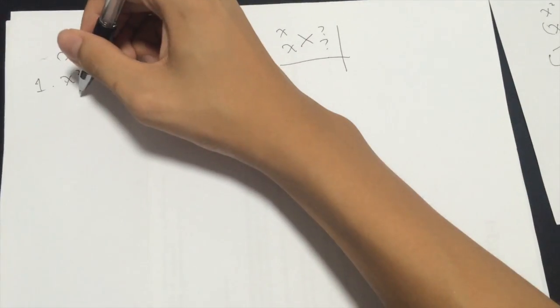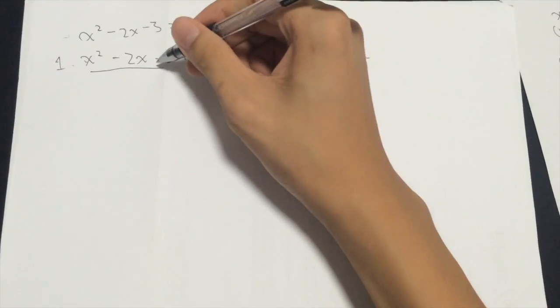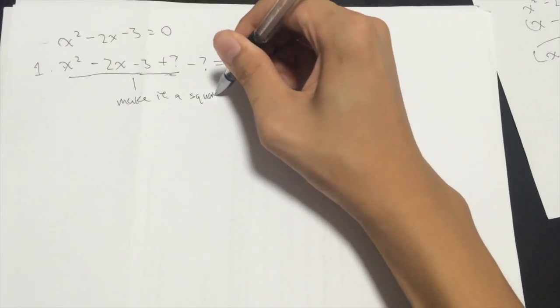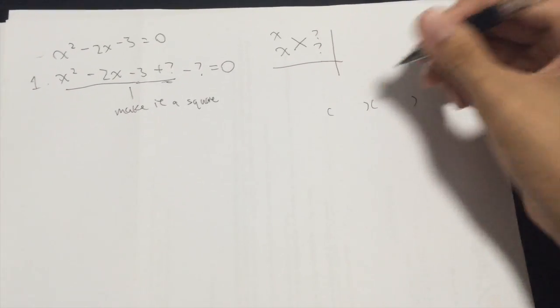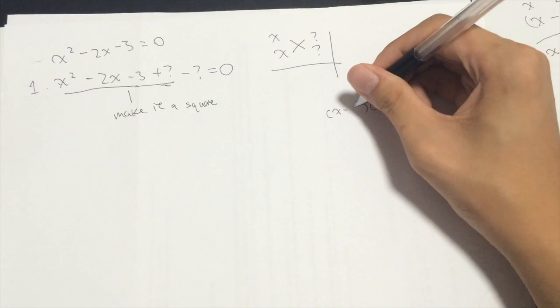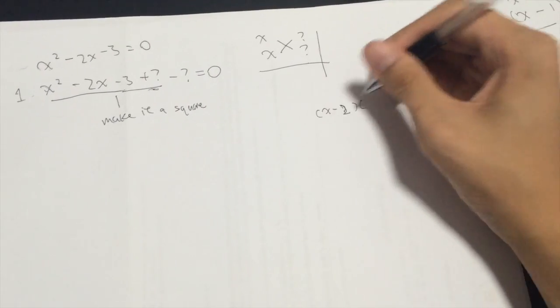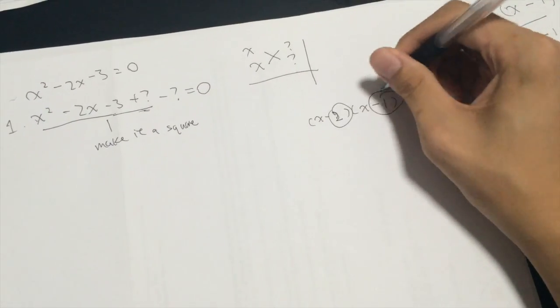Alright, the point is to make this thing a square. So a square is where two brackets where x minus an integer, a whole number for our purposes here. Yeah, integers are whole numbers.